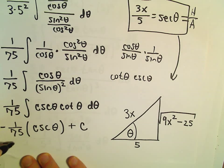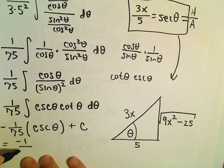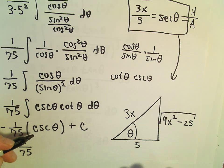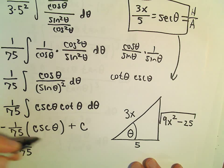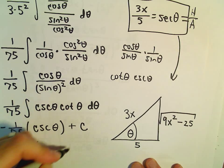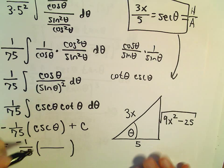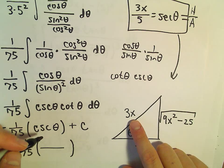So the last thing we need to do here is just read off cosecant of theta. Again, cosecant is 1 over sine. And sine is the opposite over the hypotenuse. So cosecant is the hypotenuse over the opposite.